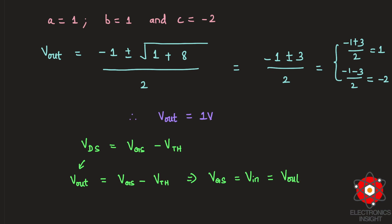From this it is easy for us to estimate the gate to source voltage which is the input voltage for the M1 transistor, which will be Vout + Vth. So Vout is 1 volt, so 1 + 0.5 which is going to be 1.5 volts as the input voltage for the transistor to enter into the linear region.